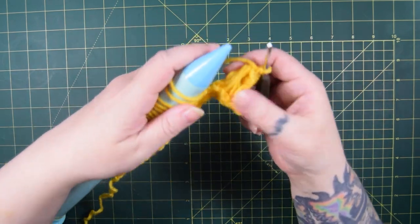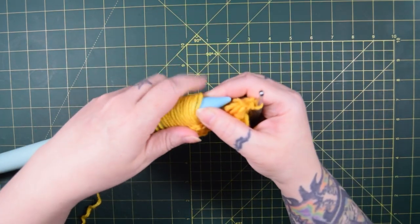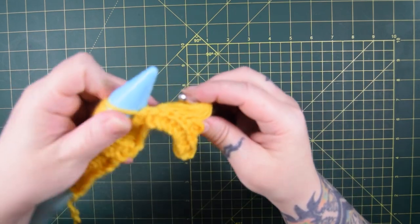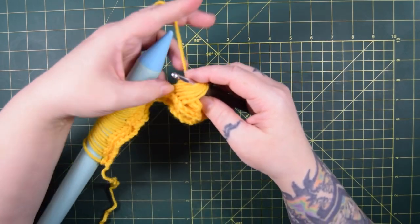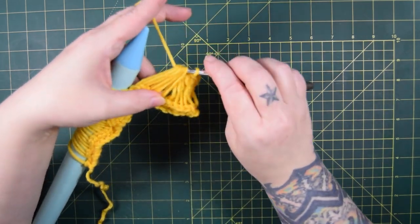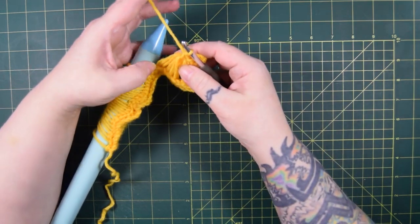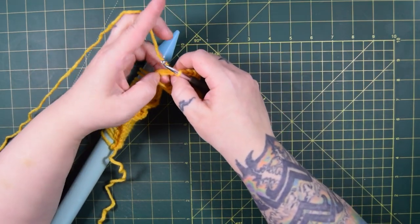After 5 single crochet are complete, we're going to slide another 5 loops off the needle, and we'll single crochet to secure them. This does count as a stitch. Work 4 more single crochet into the loops, that's 5 single crochet in total, and continue to work all the remaining loops this way.